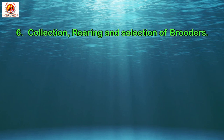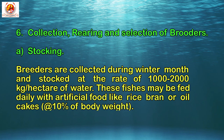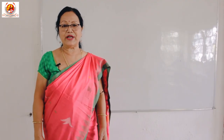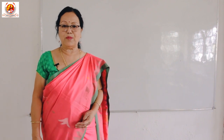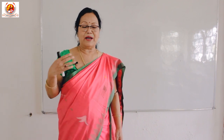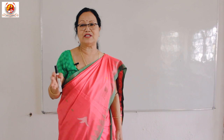Next, let us come to the sixth point: collection, rearing, and selection of breeders. Under stocking, breeders are collected during winter months and stocked at the rate of 1000 to 2000 kg per hectare of water. These fish may be fed daily with artificial food like rice bran or oil cakes at the rate of 10% body weight. Artificial feeding is not needed if natural food is present in the stocking pond. Feeding is stopped one day before the administration of injection.